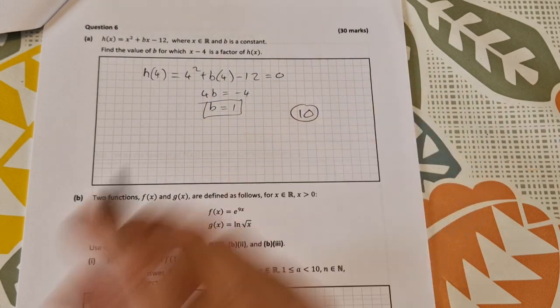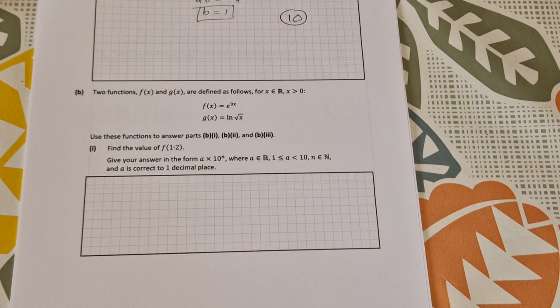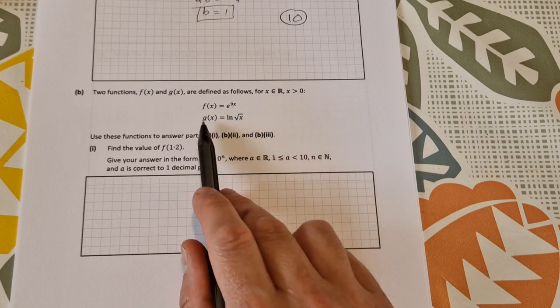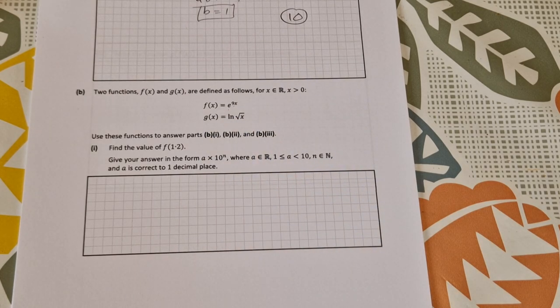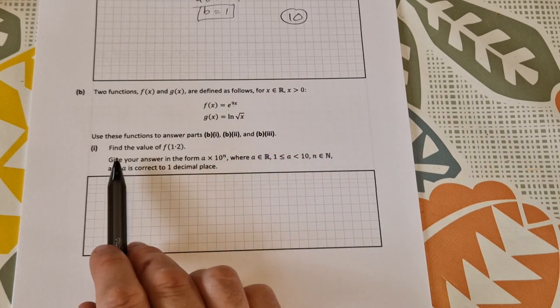That's worth 10 marks. In part b, we're given two functions: f(x) = e^(9x) and g(x) = ln(√x). Use these functions to answer the next few parts.